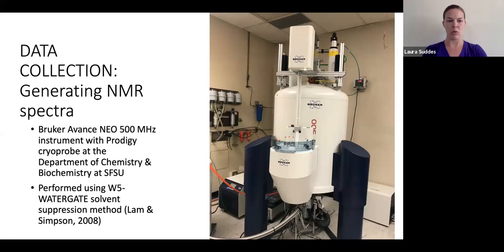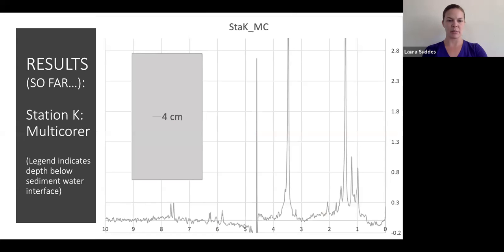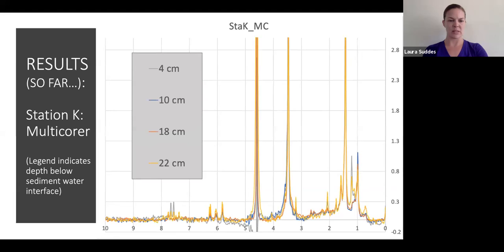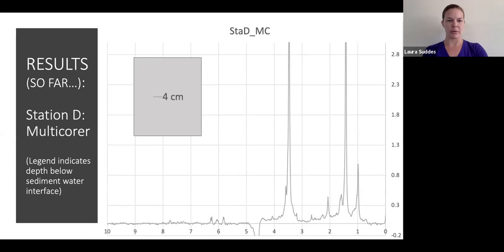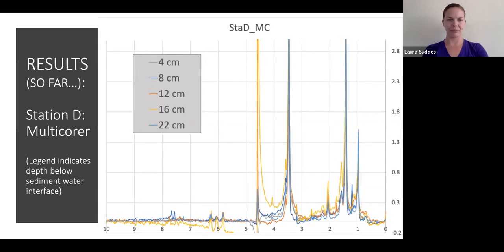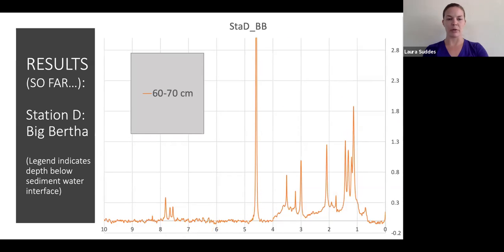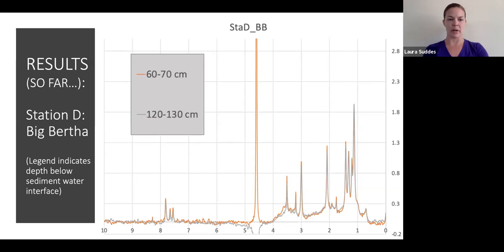Back at the lab, I've been preparing whole pore water samples for analysis by the chemistry department's Bruker Avance Spectrometer. Analysis is being performed using Lamb and Simpson's W5 Watergate solvent suppression method. So far I've processed about 14 pore water samples and have been finding that the chemical composition of the samples is more or less similar within individual cores. Here are proton NMR spectra from multi-core samples at station K, with each subsequent spectrum from a sample moving deeper into the sediment. Here are spectra from multi-core samples at station D, again moving deeper. And here's a spectrum from a Big Bertha core at station D, which goes down about three meters into the ocean floor.